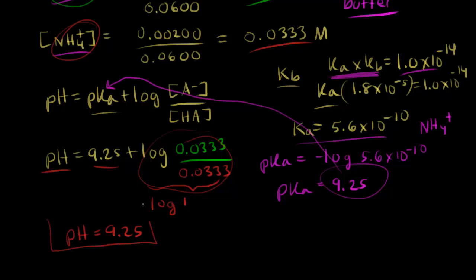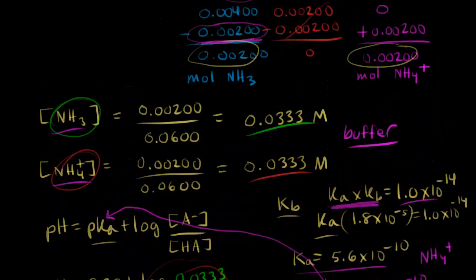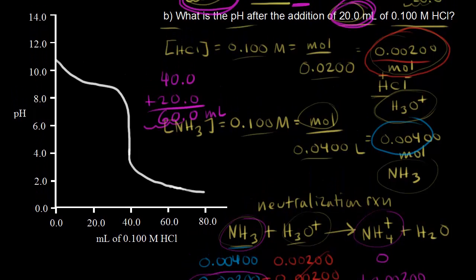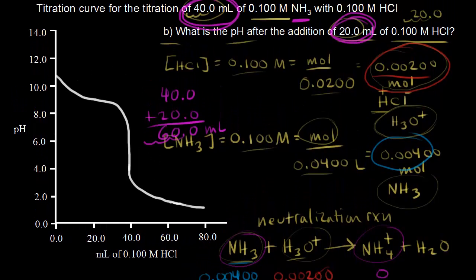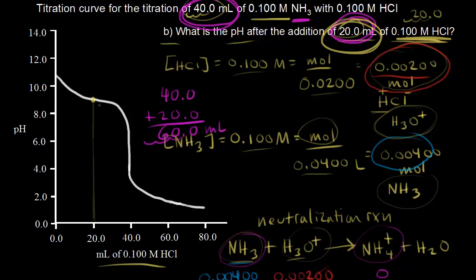Now we can find our point on the titration curve. We've added 20 milliliters of acid, so right here at 20 milliliters, the pH should be 9.25. We're still before the equivalence point.